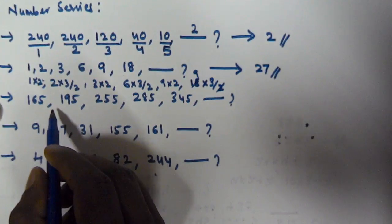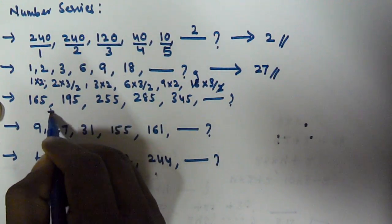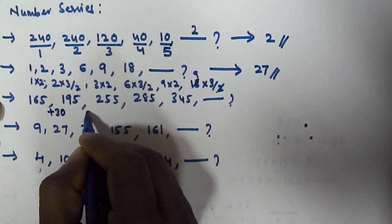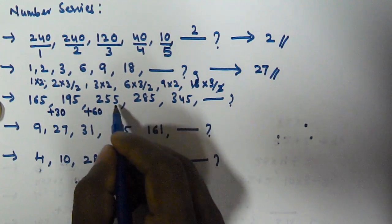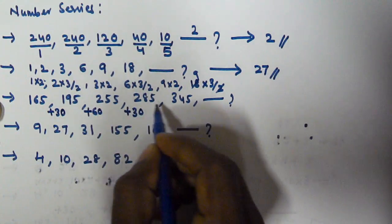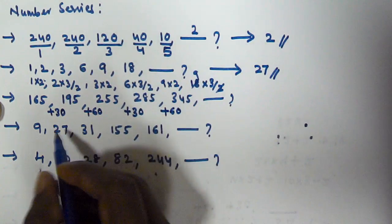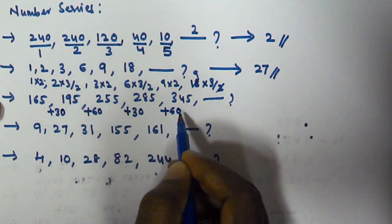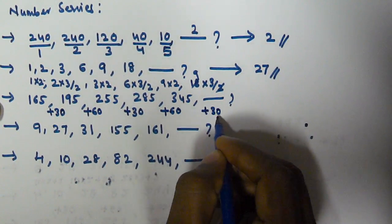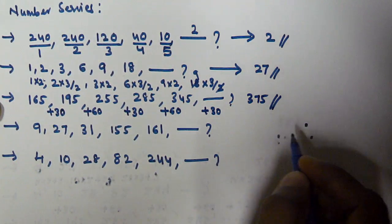For problem 3: 165 to 195 is +30; 195 to 255 is +60; 255 to 285 is +30; 285 to 345 is +60. The differences alternate +30 and +60. So the next difference is +30, and 345 + 30 = 375. The next number in this series is 375.